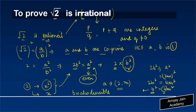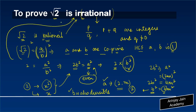Now if root 2 was a rational number, which we had expressed as A upon B, then A and B should have been co-prime, meaning their HCF should have been 1. But what we have noticed is that both A and B are divisible by 2, meaning that they have another common factor which is 2. This cannot be true if root 2 was rational. Therefore, we say that square root of 2 is an irrational number.